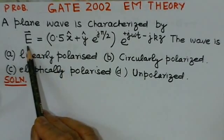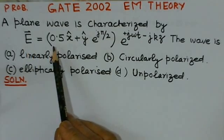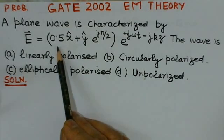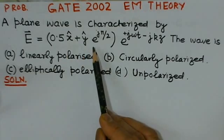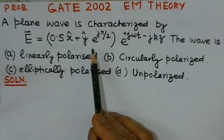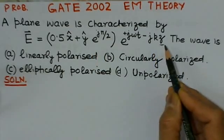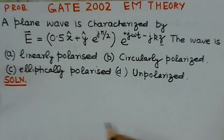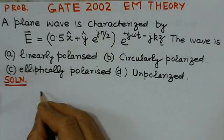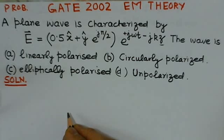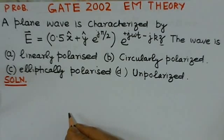What we observe from this problem is that the electric field has both x and y components. That means the electric field exists in the x direction and also in the y direction. The direction of propagation of the wave is the z direction. We can write the electric field components — the x component and the y component.